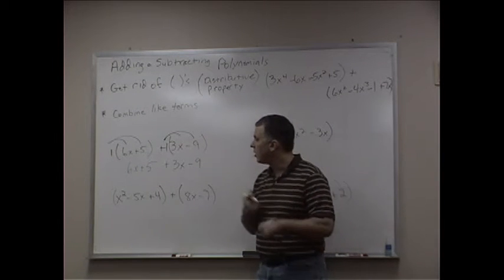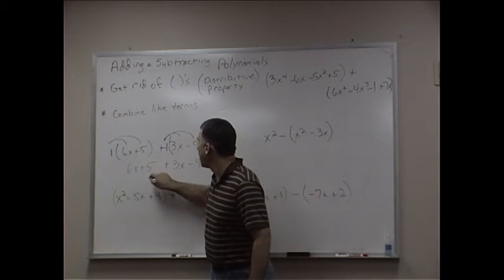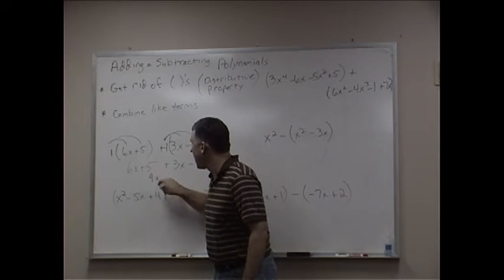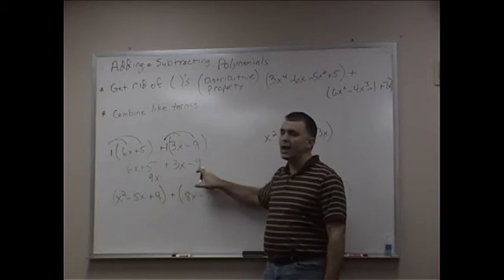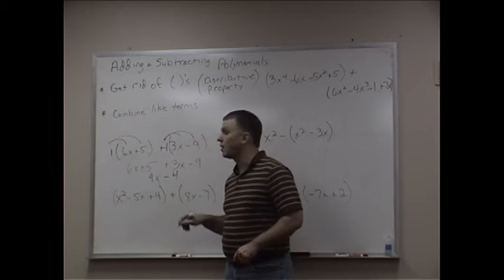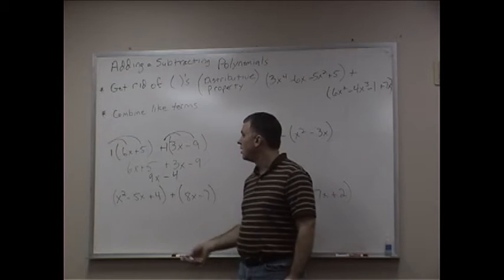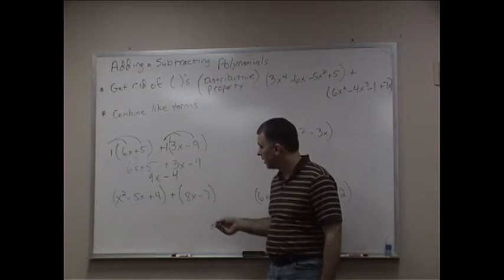Now, let's combine the like terms. So 6x and 3x, that's 9x. 6 plus 3 is 9 for 9x. 5 and negative 9, when you combine those, is negative 4. So I'm going to write minus 4. Positive 5, negative 9, put them together, negative 4.